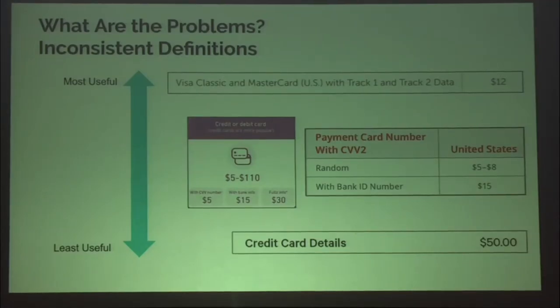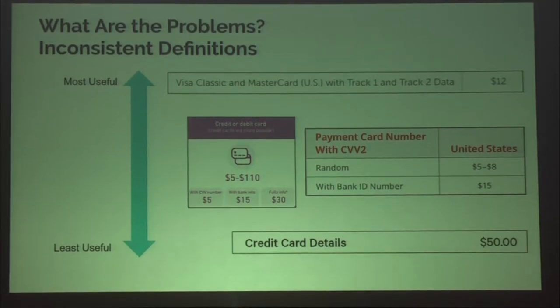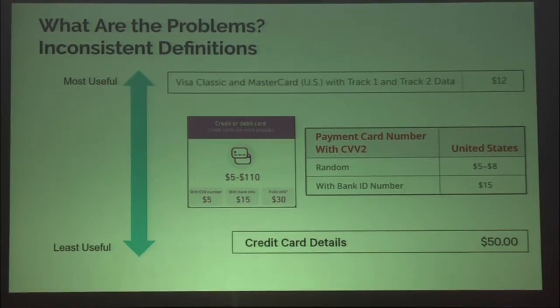We're focused on prices for digital goods used for fraud, in particular payment card information. Within the categories we looked at — payment card information, identity information, and account information — we found about 22 product categories. This slide shows a sample of the prices we saw for payment card information, listed from most useful to least useful. At the very bottom, we have 'credit card details for $50.' What does that mean? What type of credit card is it? Where did it come from? Is it actually more than one credit card?